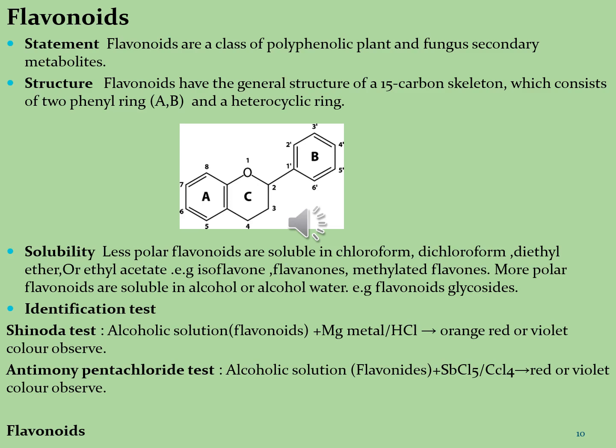Flavonoids are abundant in plants where they function as pigments to attract pollinating insects. In higher plants they are required for UV filtration, nitrogen fixation, cell cycle inhibition and as chemical messengers. Flavonoids are created by plant roots in a symbiotic relationship between rhizobia and certain vegetables such as peas, clover and beans. You can see the basic skeleton of flavonoid molecules.